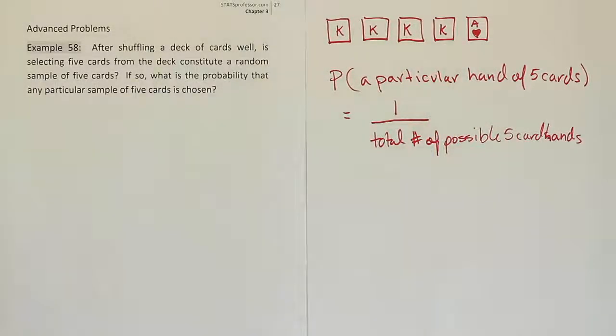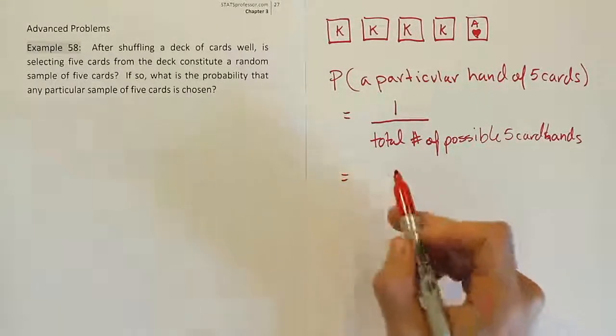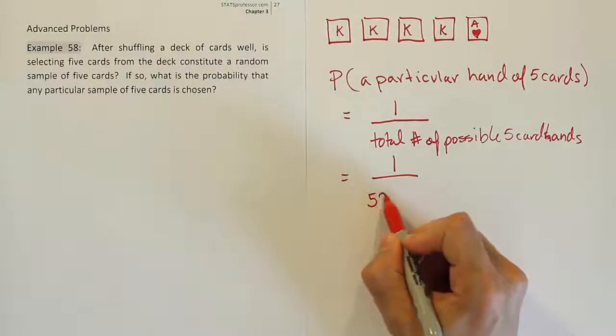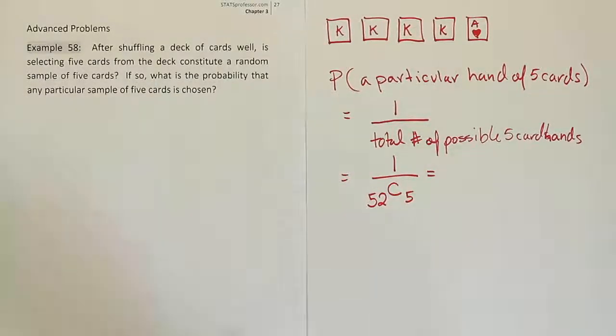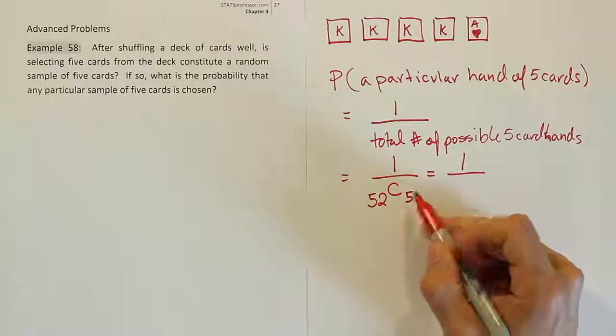If that's the case, combinations fits perfectly. So let's go ahead and say that the answer to the denominator here is going to be out of 52 cards, you want to choose five of them. And so that's your answer. It's going to be one over whatever this turns out to be.